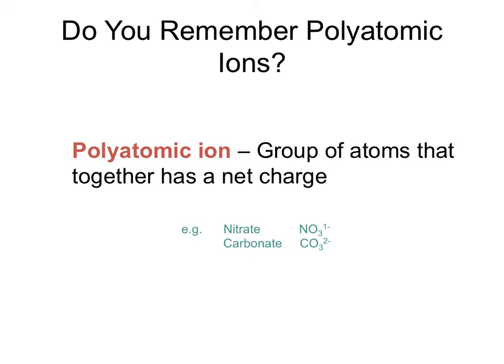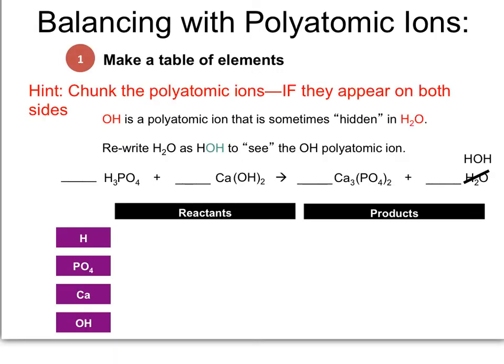Hopefully you haven't forgotten your polyatomic ions — groups of atoms that have a charge, such as nitrate and carbonate. We are now going to balance a chemical equation that has ionic compounds with polyatomic ions in them. So let's balance with polyatomic ions. We are going to do the same thing we did before — make a table of elements — and we are going to chunk the polyatomic ions if they appear on both sides. Hydroxide is a polyatomic ion that is sometimes hidden in water's formula of H2O, so we want to rewrite H2O as HOH if we see the hydroxide polyatomic ion on one side. You can see that we have done that right here.